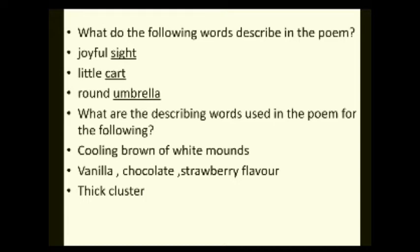Next activity: what do the describing words in the poem describe? Three words are given — joyful, little, round — and you have to connect them to the words they describe in the poem, like 'joyful sight,' 'little cart,' and 'round umbrella.' You have to write this in the textbook. The next part asks: what are the describing words used in the poem for 'flying,' 'cooling,' and 'brown of white mounds'? Again three words are given — mounds, flavor, cluster — open textbook page number eight.